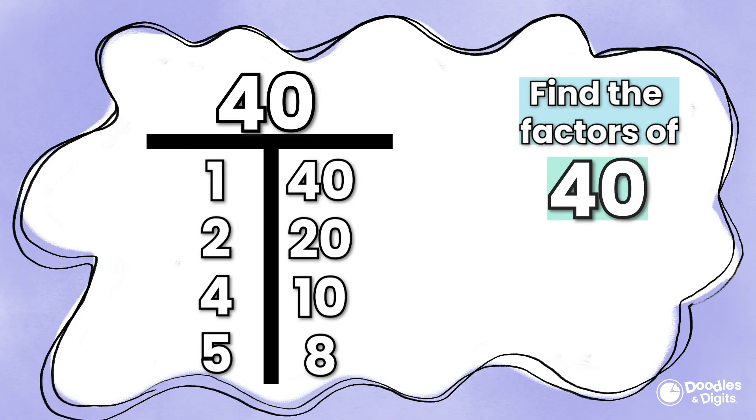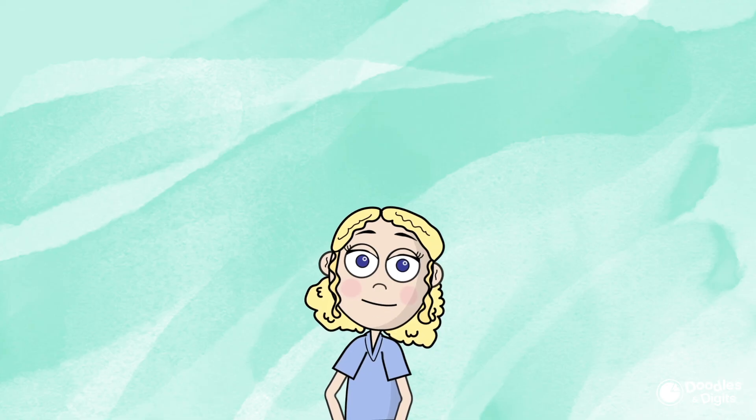So the factors of 40 are 1, 40, 2, 20, 4, 10, 5, and 8. Did you get it correct?